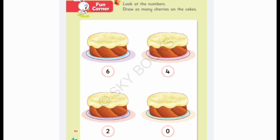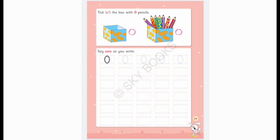Look at the numbers. Draw as many cherries on the cakes. This is your another activity. Tick the box with zero pencils. Then, you have to write and say zero.